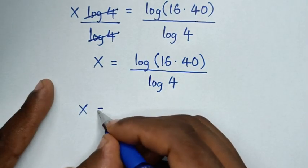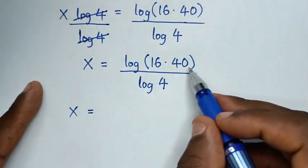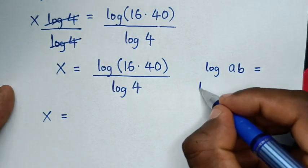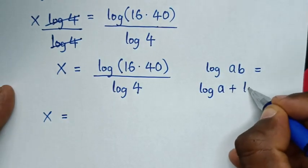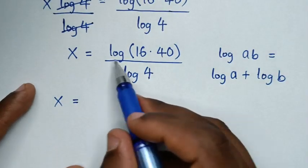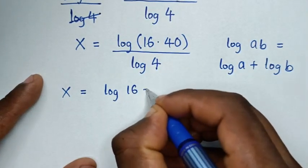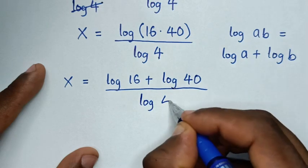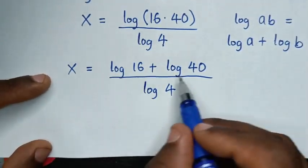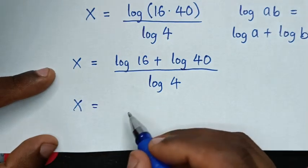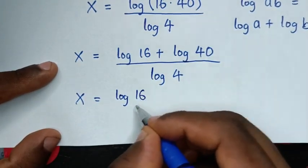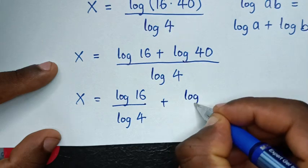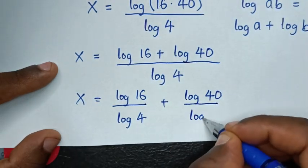Then from log of 16 times 40, this part is in the form of log of a times b, which equals log of a plus log of b. So log of 16 times 40 is the same as log of 16 plus log of 40, all over log of 4. Dividing each term by log of 4 gives log of 16 over log of 4 plus log of 40 over log of 4.